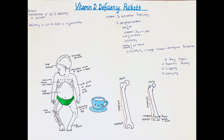This disorder in kids we refer to as rickets. When we talk about rickets we refer to the manifestations of vitamin D deficiency and its abnormal metabolism in children. The main key point to take home is that this is a disorder in children due to a deficiency of vitamin D as well as hypocalcemia, and this results in an interference with bone deposition within the growth plates of these kids.